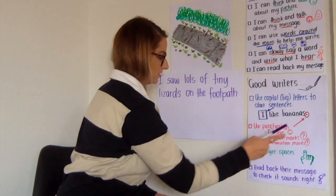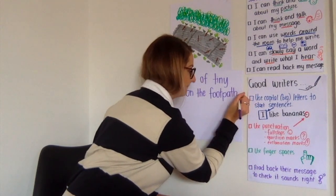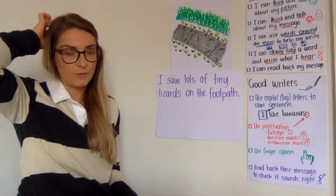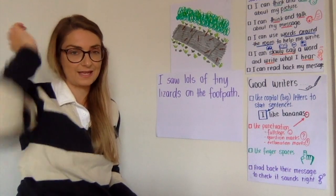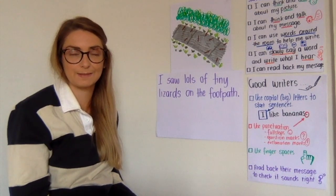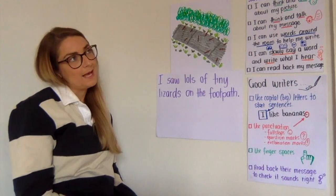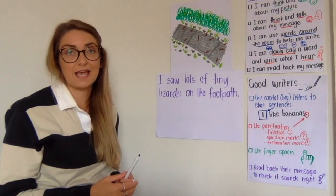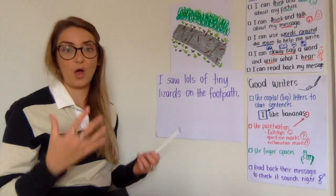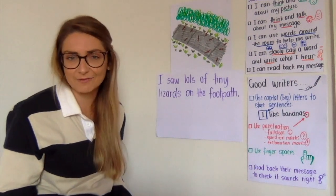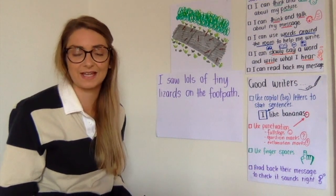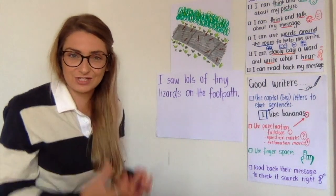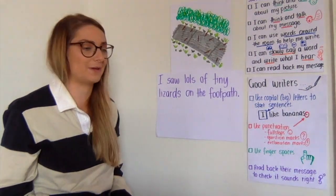Now my sentence is finished, so I'm going to put a full stop. Now I'm going to think about what else I want to write. I'm going to say: they were enjoying the sun. But I want to make it a bit more interesting — it was a very sunny day, so I think I'm going to say they were enjoying the hot sun. Because lizards love to lie in the sun, and so do snakes, because they're reptiles. And reptiles get their energy from the sun, so I think that's what they were doing.